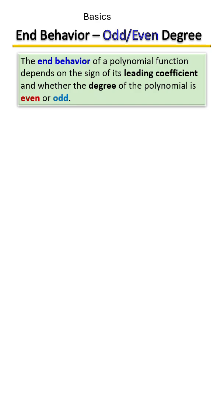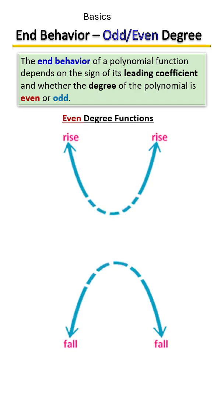Even degree functions both ends will either rise or fall. It doesn't matter how many turning points that you have in between, and in fact that's what this dash here represents, the turning points.